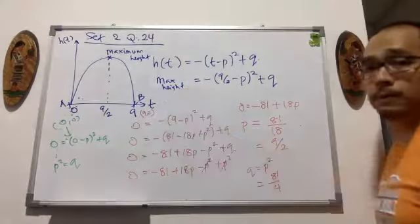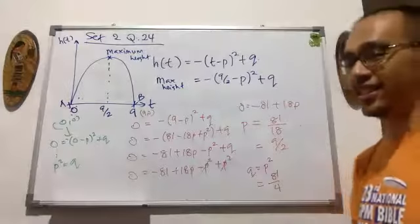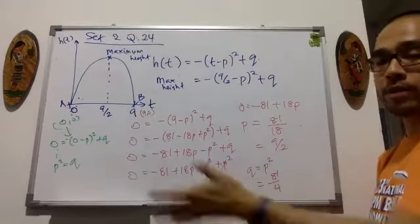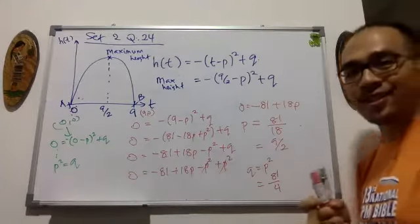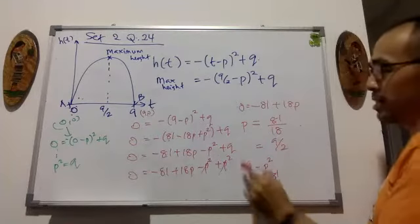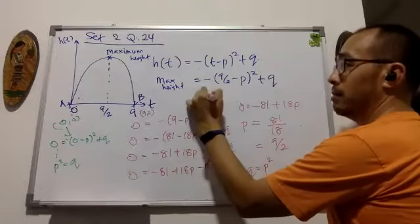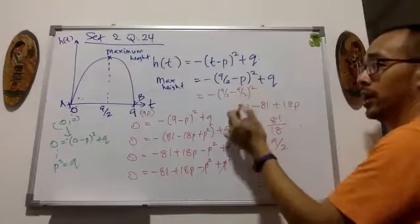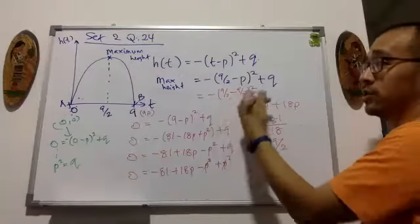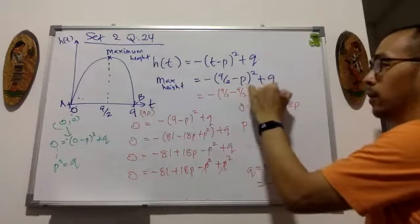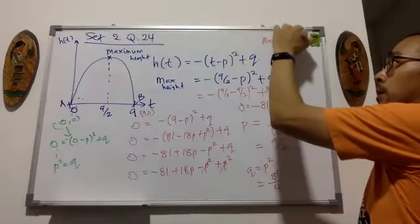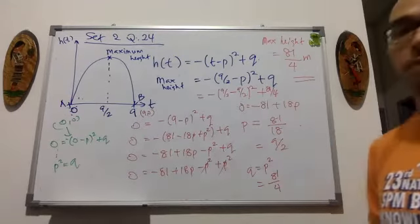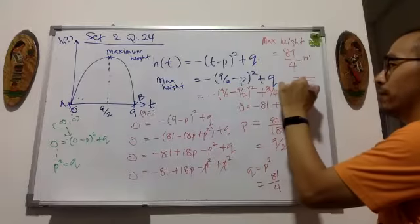Now that we have p = 9/2 and q = 81/4, we can substitute to find the maximum height. The maximum height is: minus (9/2 minus 9/2) squared plus 81/4. Since 9/2 minus 9/2 equals zero, this simplifies to just 81 over 4, which is about 20.25. So the maximum height is 81 over 4.